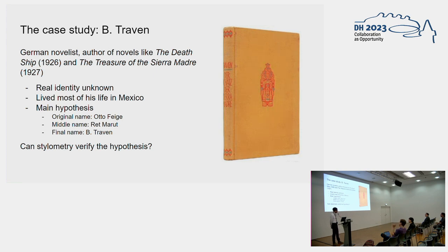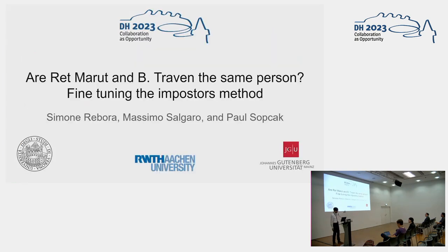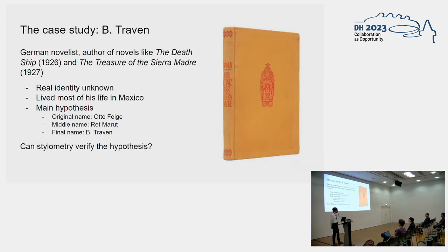There are many hypotheses about his identity, sometimes even crazy hypotheses. The Germanist in our group, Massimo Salgaro, the second author in the list, did some research on these hypotheses trying to identify the most reliable ones. Here I'm showing you the one that is clearly the most shared among scholars.